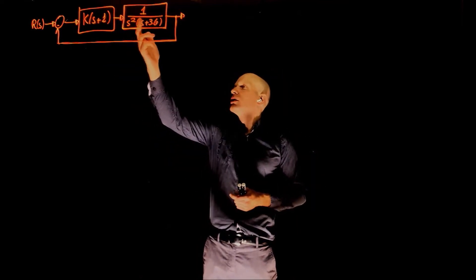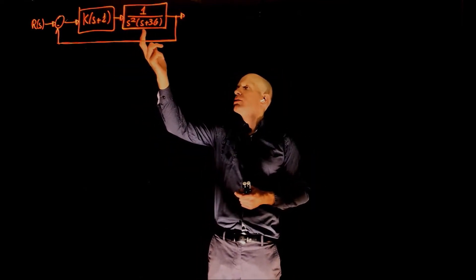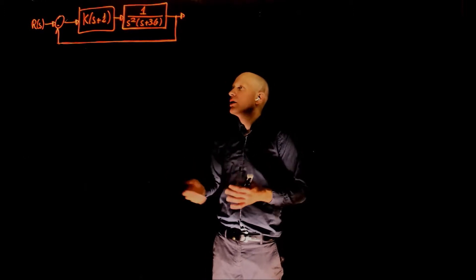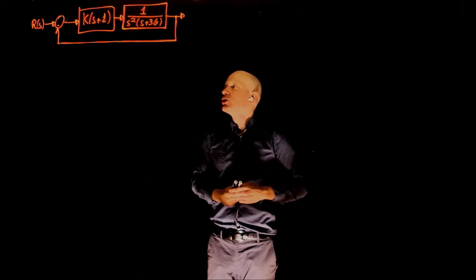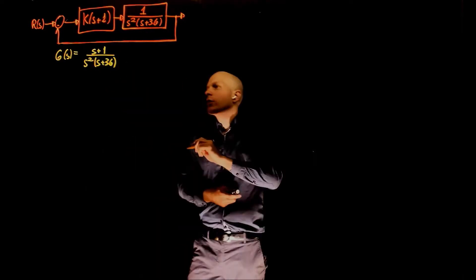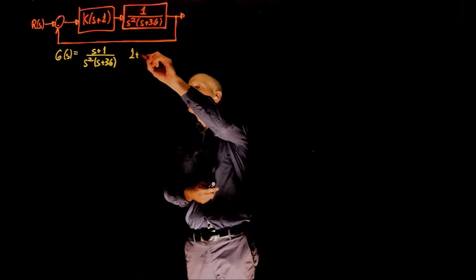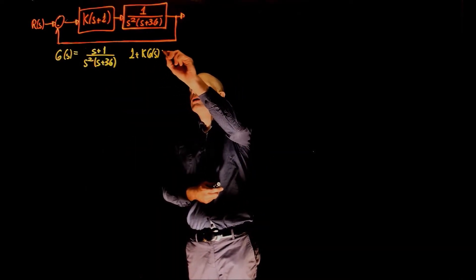We can now use s plus 1 divided by s squared times s plus 3.6. That is the characteristic equation, that is our function g of s, where the characteristic equation is 1 plus k times g of s equals to 0.